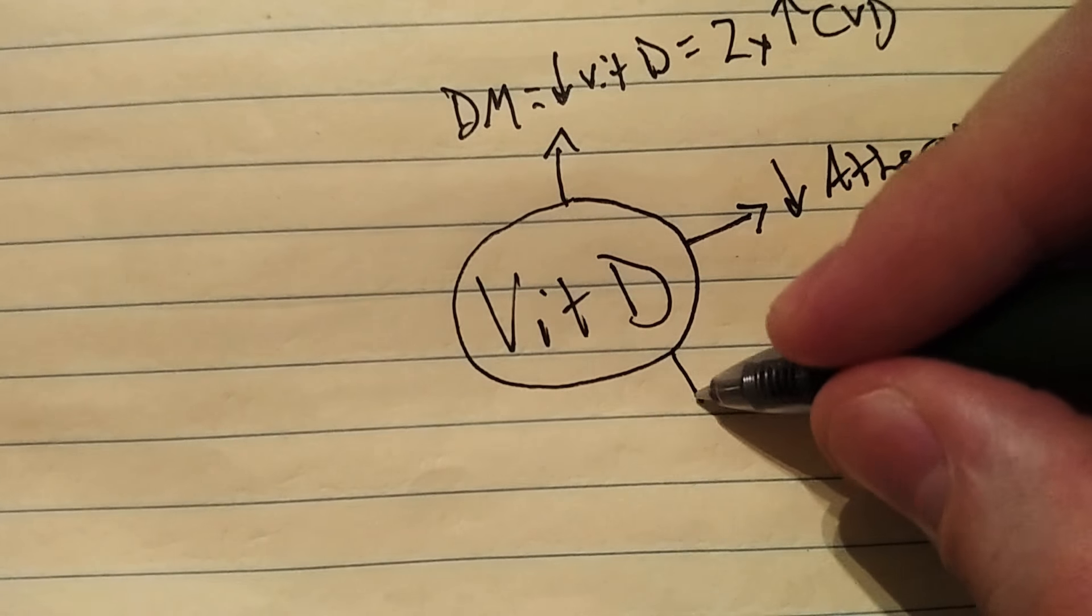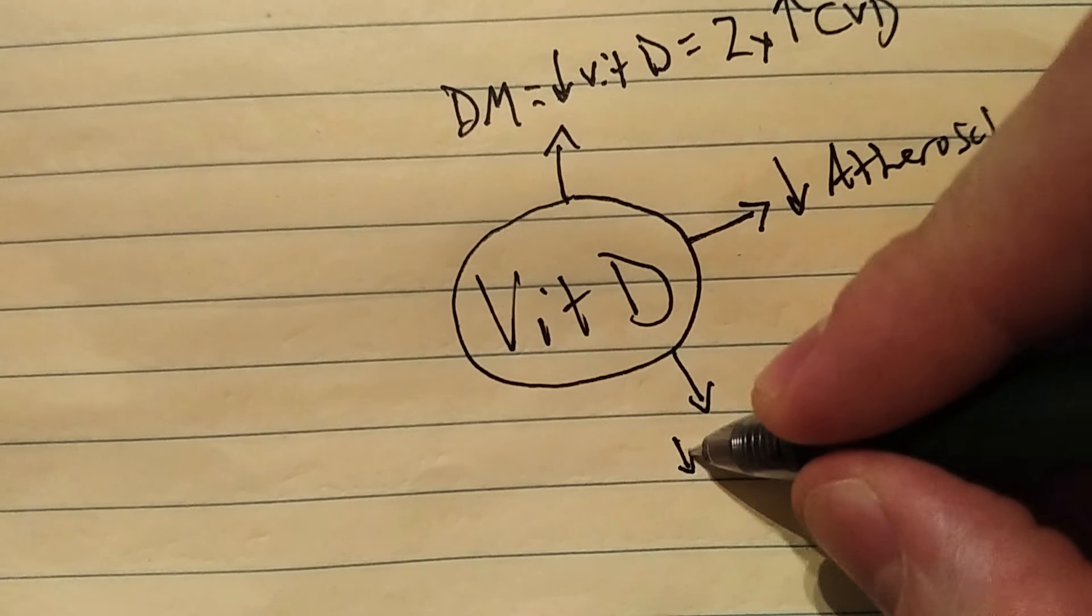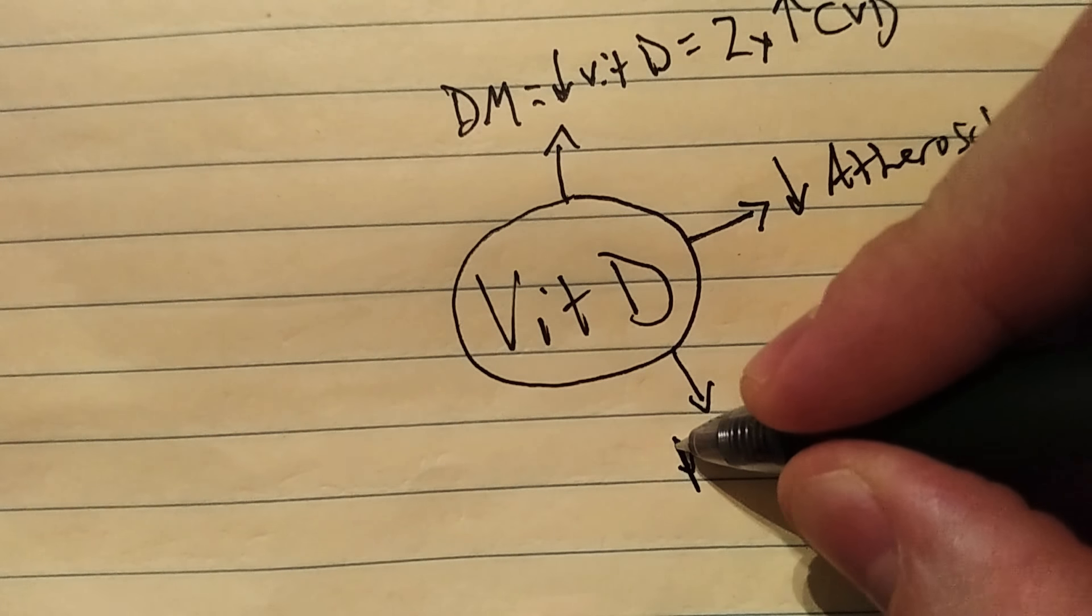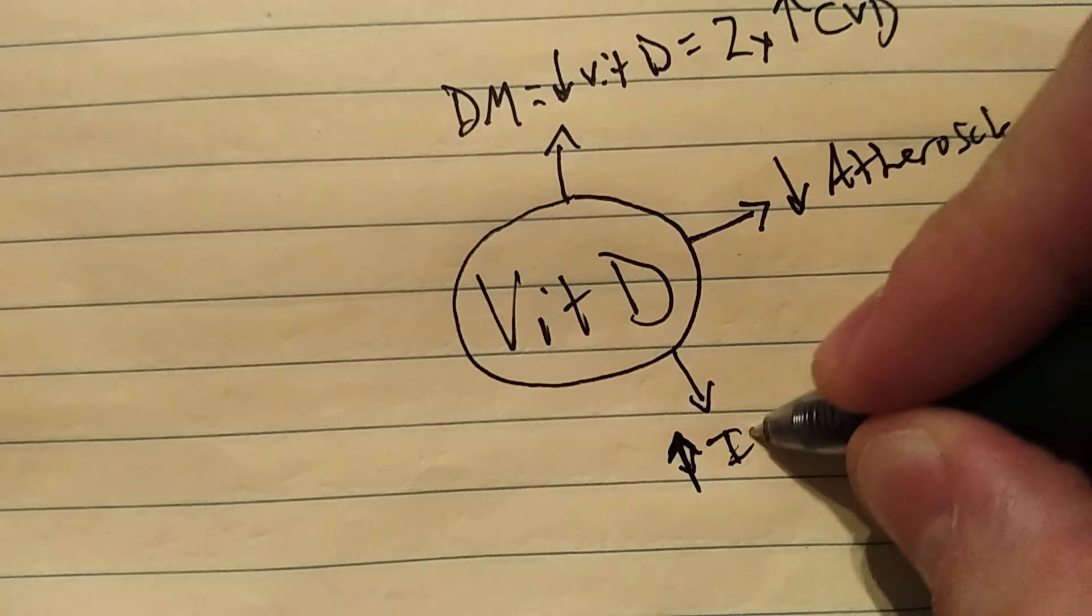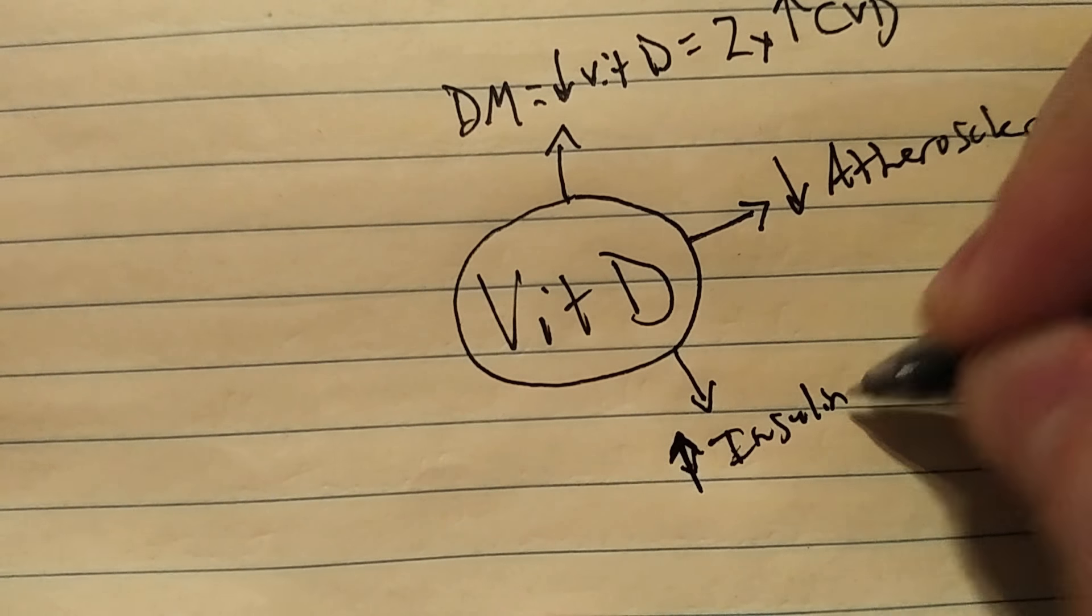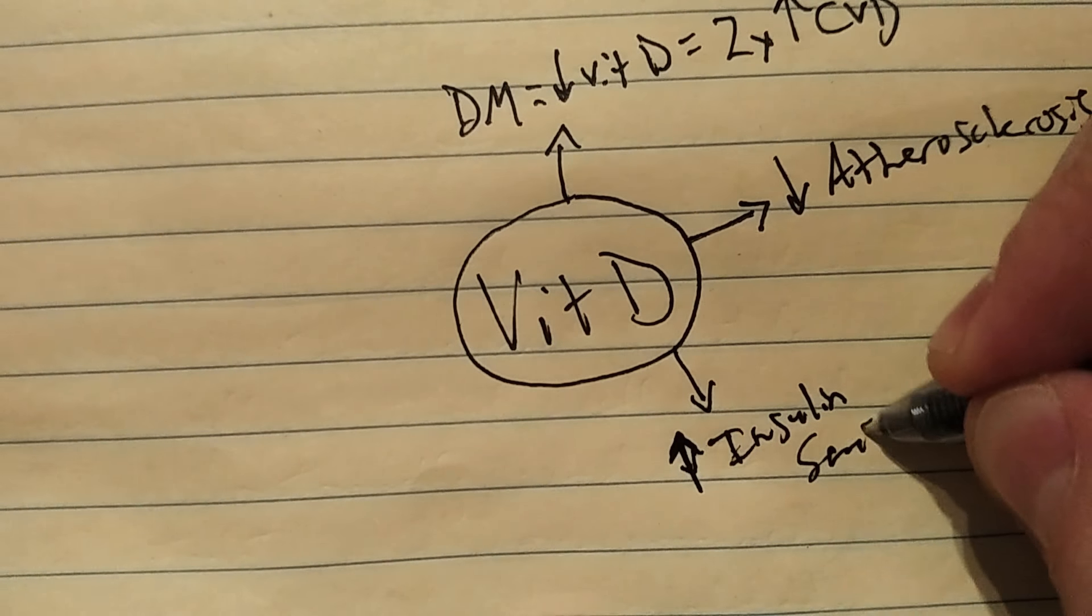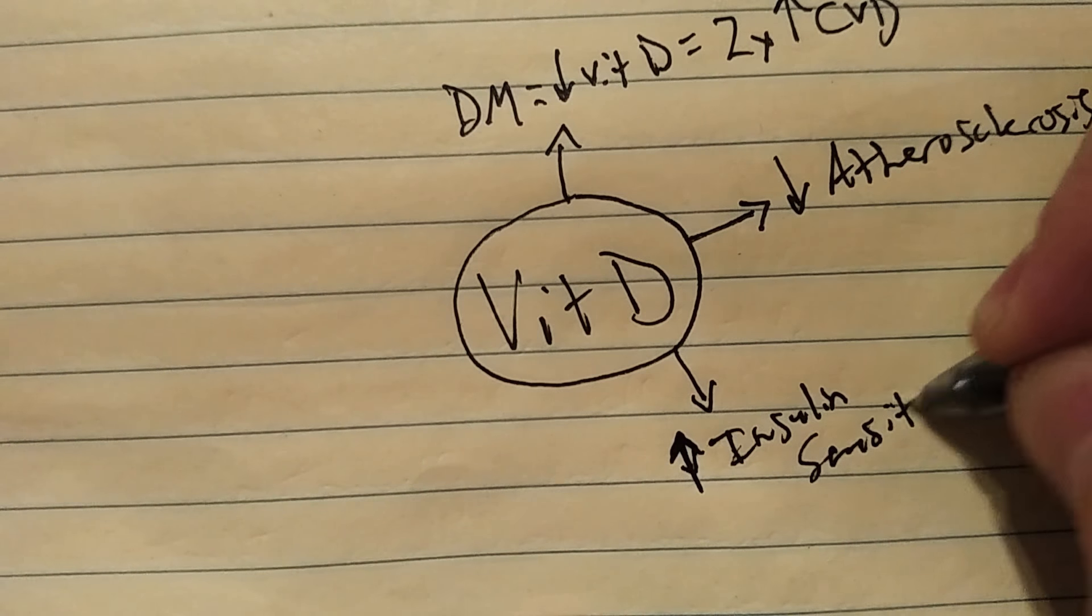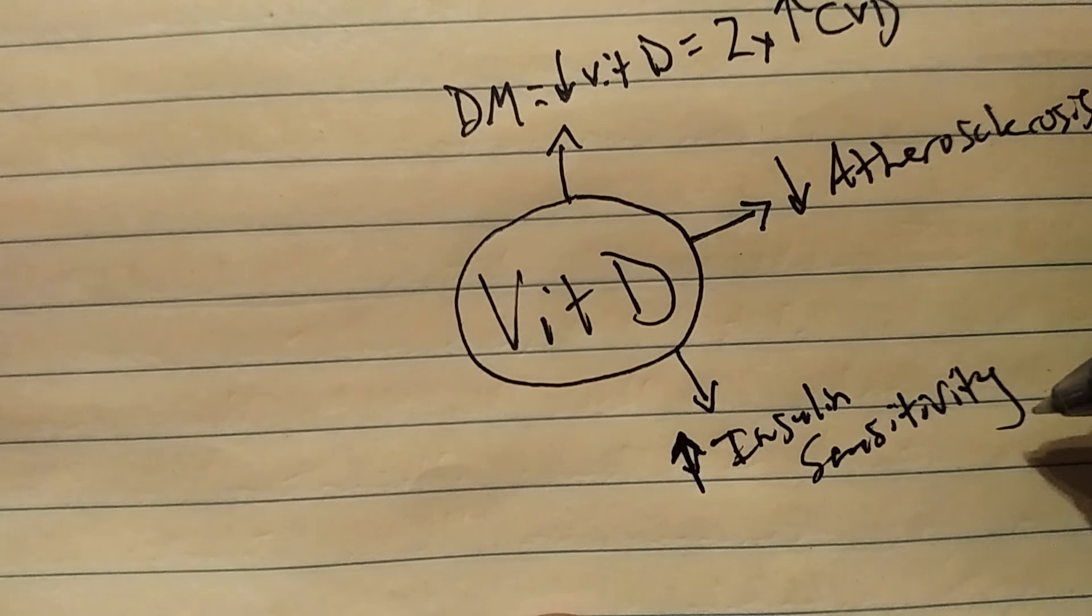Vitamin D has been shown to increase insulin sensitivity in people with blood sugar issues. So that's insulin resistance, pre-diabetes, diabetes.